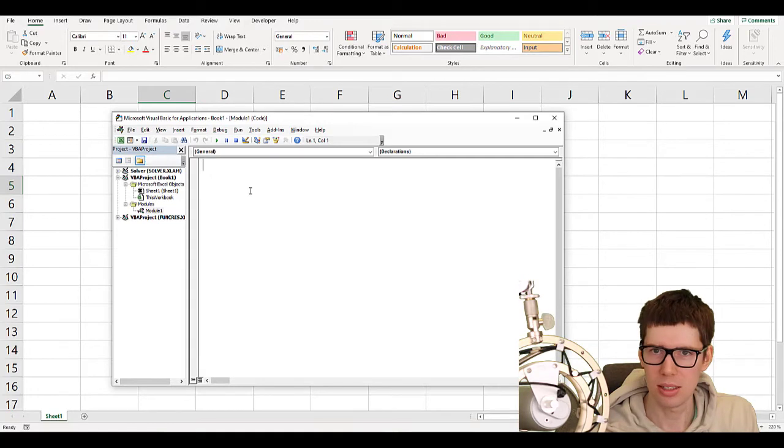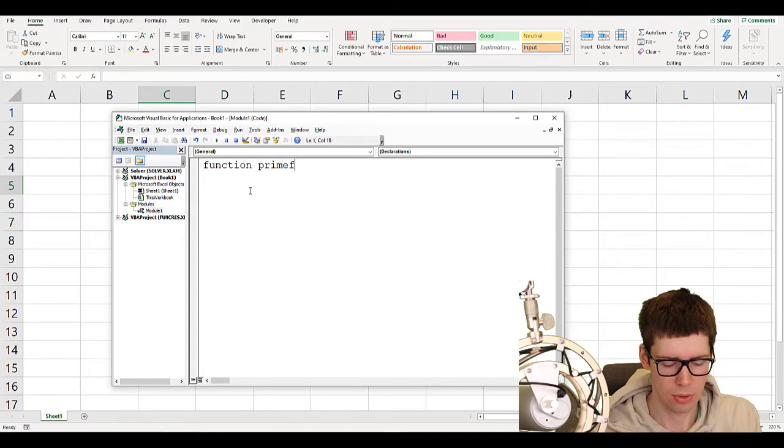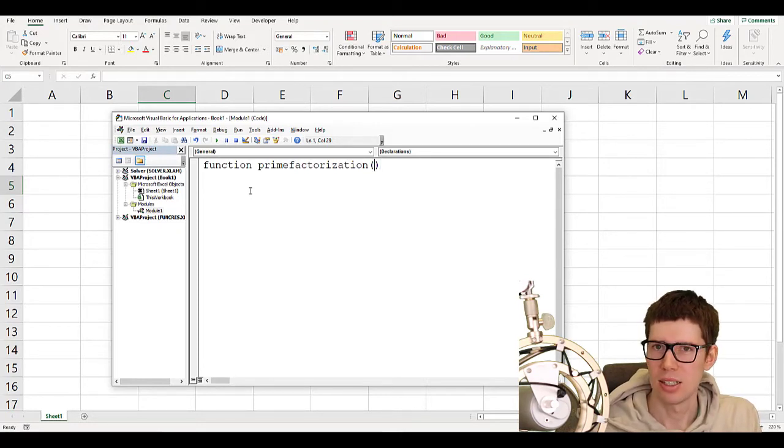So for instance, we are going to make a function that can perform prime factorization. So we write function, and then we need to come up with a valid name such as prime factorization, open parentheses and close parentheses. Inside the parentheses we need to provide the list of input variables and specify their data type. And outside the parentheses we need to specify the data type of the output of the function.